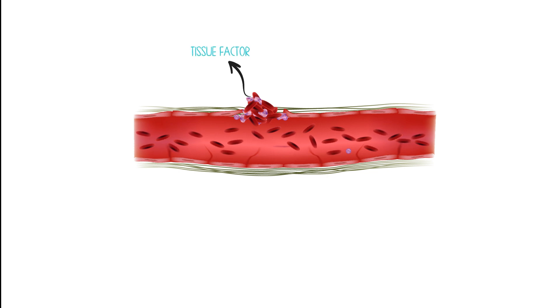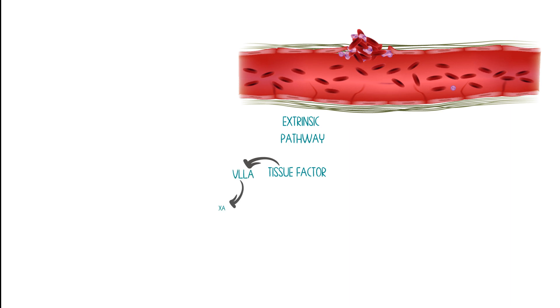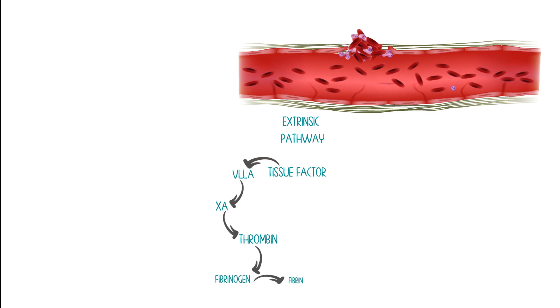This creates a platelet plug, but that's not quite enough. We need a fibrin mesh to hold everything together and form a hard clot. Fibrin is a result of the coagulation pathway. We have extrinsic and intrinsic pathways. The extrinsic pathway starts with tissue factor, which is released by damaged endothelial cells. Tissue factor activates factor 7, which activates factor 10, and this activates thrombin. Thrombin can then convert fibrinogen to fibrin.